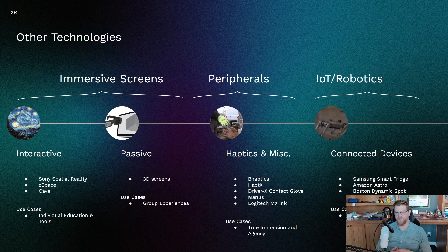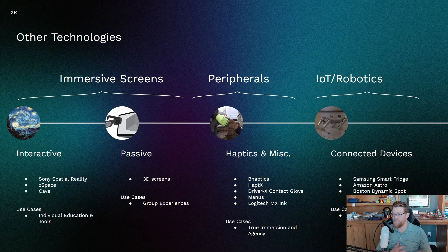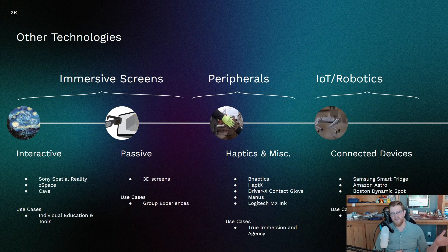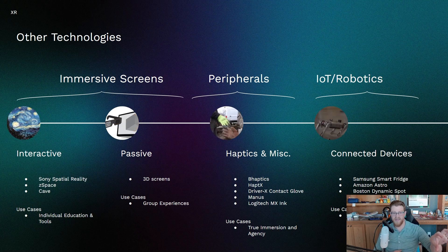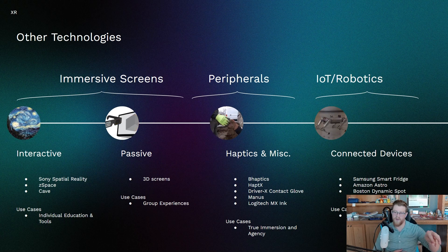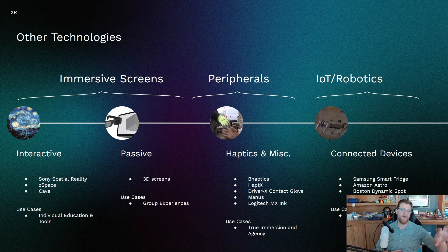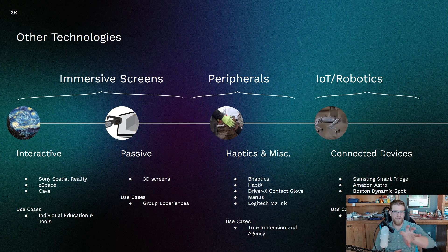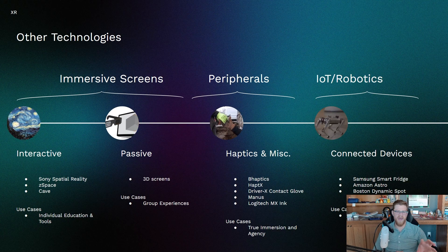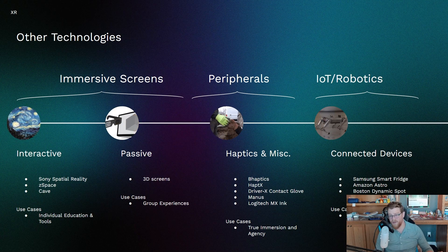The nice thing with passive immersive screens is that they can be used for group experiences, whereas the interactive piece usually has to track the main viewer — meaning it can only be used by one person at a time so that it gets all of the perspective and parallax right. Whereas passive doesn't need to track you, so it can be used for 100 people instead of one.